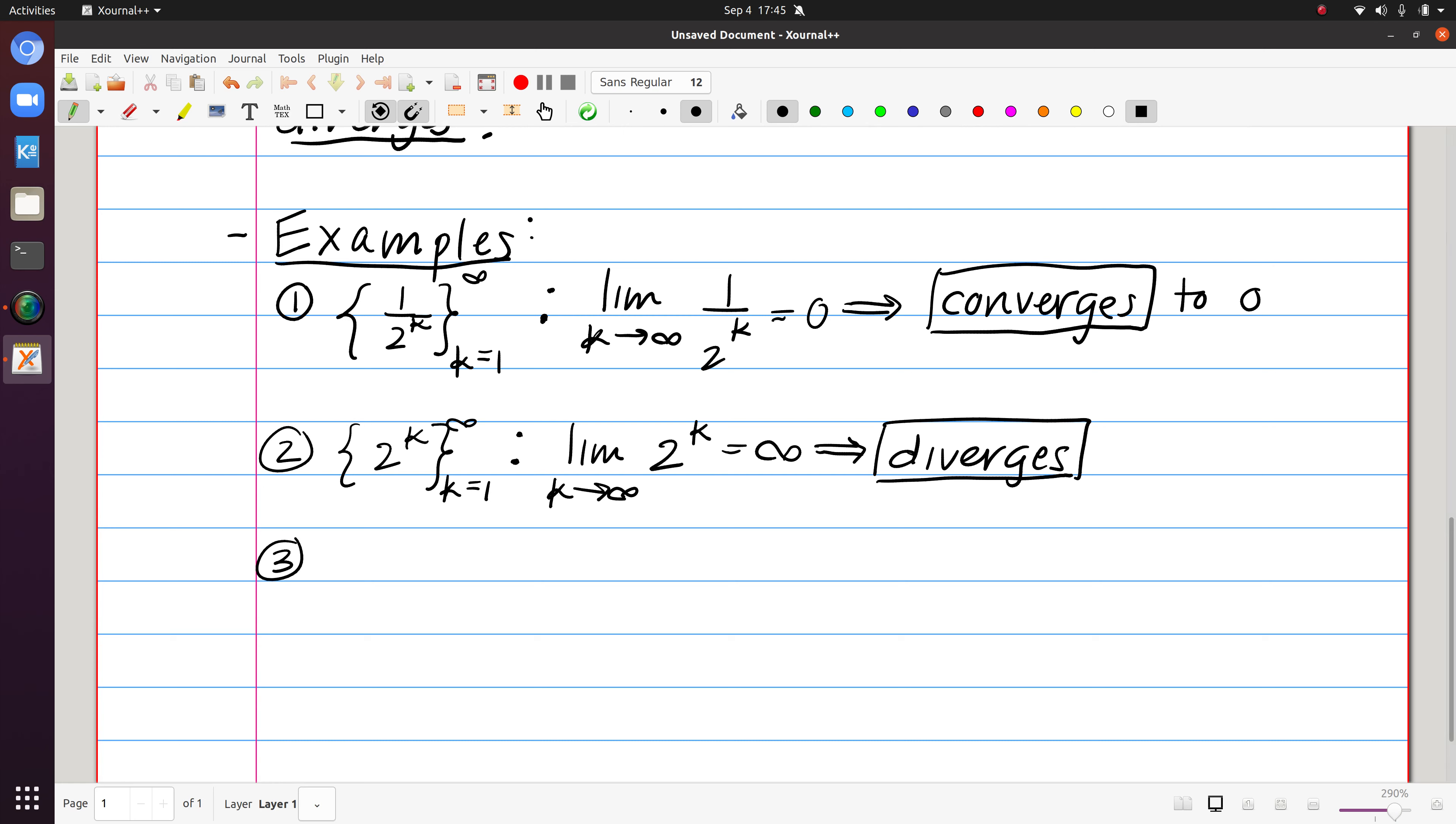And then our last example was minus 1 to the k, from k equals 1 to infinity. Again, in trying to determine if this converges or not, I look at the limit as k approaches infinity of minus 1 to the k. And notice this is an example where as I change the value of k, this is going to continue to oscillate between minus 1 and positive 1. So with something like that, that's exactly when we say that the limit does not exist. In order for the limit to exist, I should be able to find a single value that all of the terms eventually approach. In this case, I would always vary between minus 1 and 1. So this is another way that we can see a sequence that diverges.